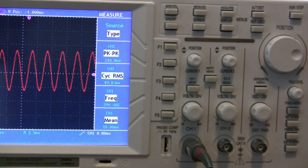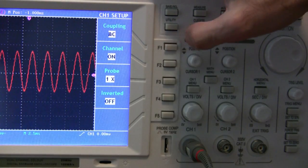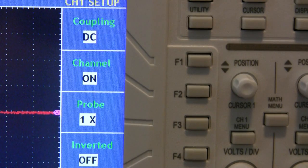All oscilloscopes will allow you to choose between these modes. DC coupling is generally what you want to use for most circuits because it will allow you to view most DC voltages.